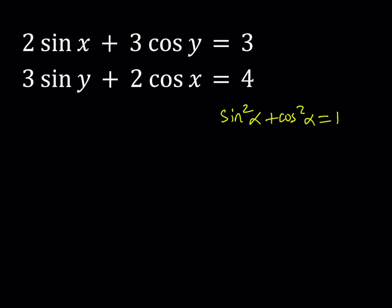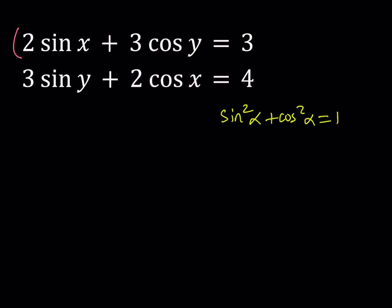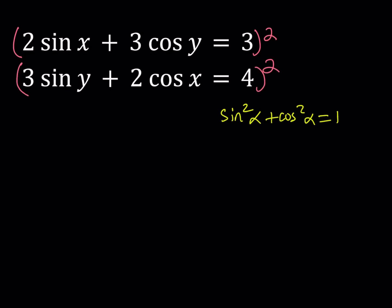Let's go ahead and use this to our advantage. For this purpose, since I do see that I have 2 sine x and 2 cosine x with the same coefficients, and sine y and cosine y have the same coefficients, to take advantage of the Pythagorean identity, I would like to square both sides of each equation and then see what happens from there.